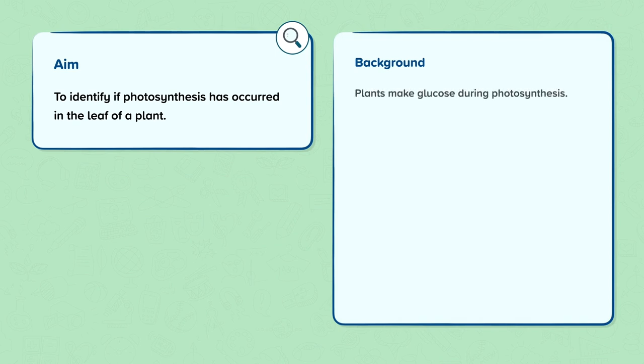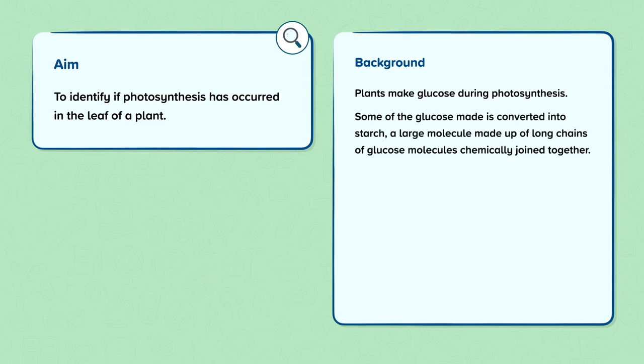Some background information. Plants make glucose during photosynthesis. Some of that glucose made is converted into starch, a long molecule made up of long chains of glucose molecules chemically joined together.